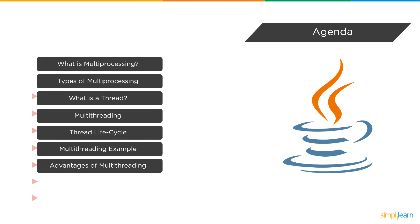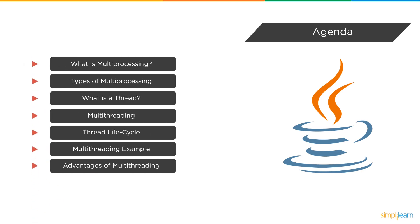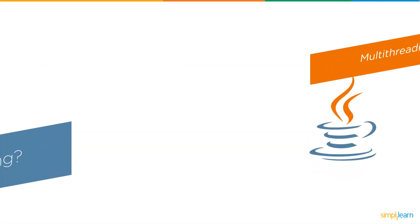Now without further ado, let's get started with our agenda for today's discussion. First, we'll discuss what exactly is multi-processing. Then, we will discuss the types of multi-processing. After that, we will understand what exactly is a thread. Then, we will learn multi-threading in Java, followed by the life cycle of a thread in Java. Then, we will execute a simple program based on multi-threading in Java. And finally, we will wind up the session by discussing the advantages of multi-threading in Java.